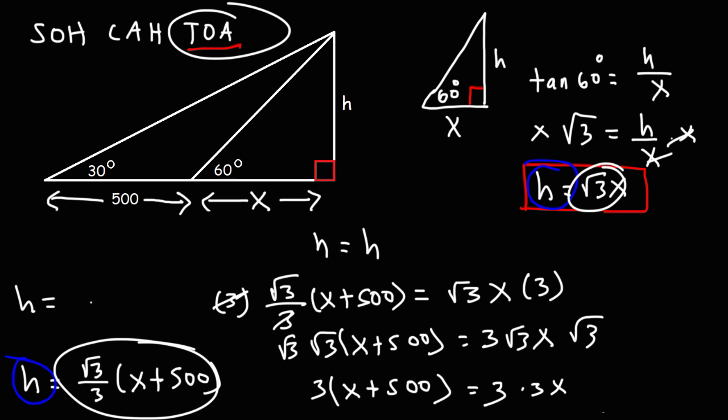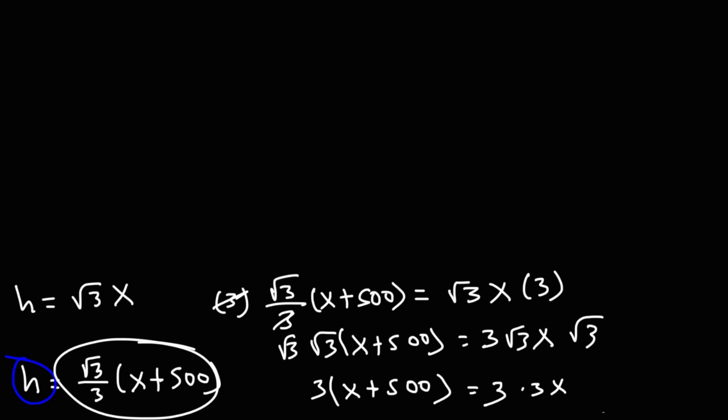Now I need to clear away some space here. So on the left side, I have 3 times x plus 500. On the right side, it's 3 times 3x, which is 9x.